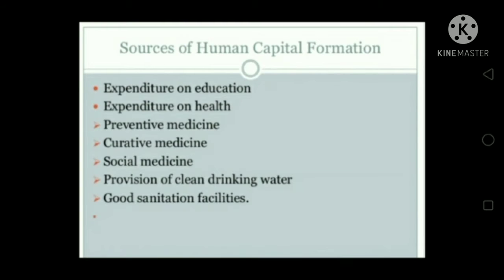Second, expenditure on health. Health expenditure is a source of human capital formation as it directly increases the supply of healthy labor force. Poor health and malnutrition adversely affect the quality of manpower. A sick laborer without access to medical facilities is compelled to be absent from work, resulting in loss of productivity. Therefore, expenditure on health is important to build and maintain a productive labor force and to improve quality of life of people in society.